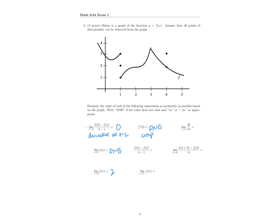Next, we have f of 4 minus f of 1 over 4 minus 1. Since we don't have a limit here, this is actually just the formula for average rate of change. So f of 4 is the point 4 comma 3, and f of 1 is the point 1 comma 2. So f of 4 is 3, f of 1 is 2, and we get 3 on the bottom, giving us 1 third as our answer. The average rate of change between these two points is 1 third.